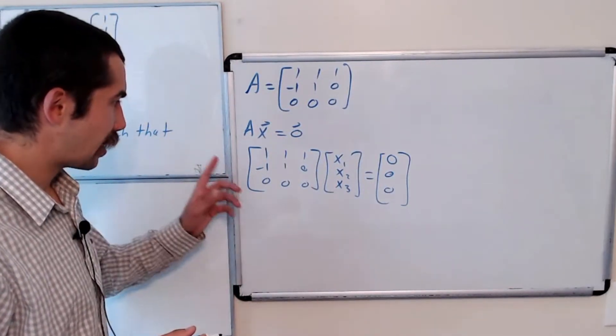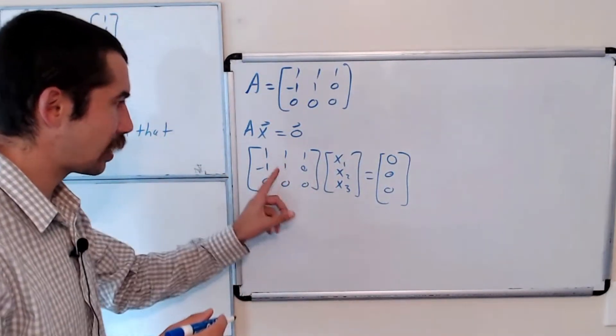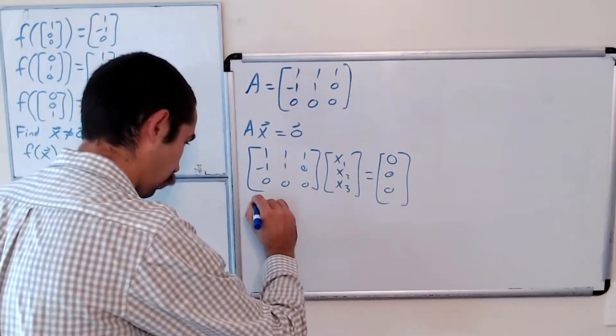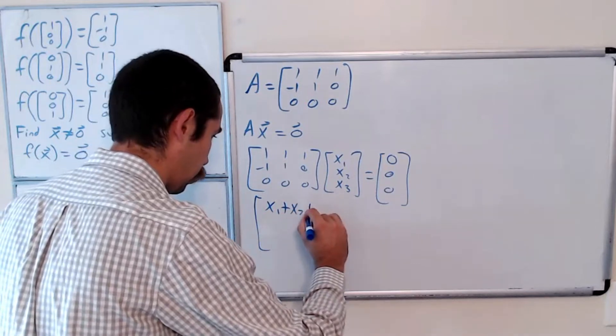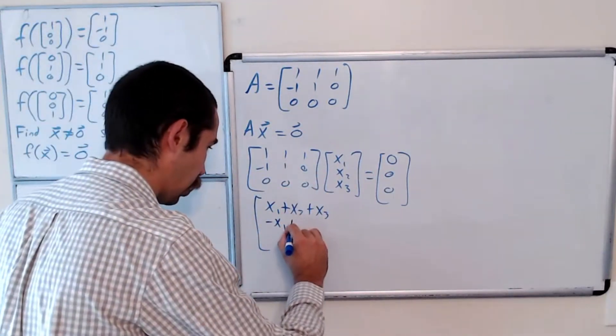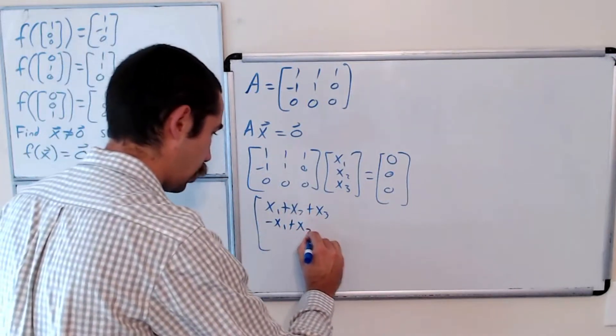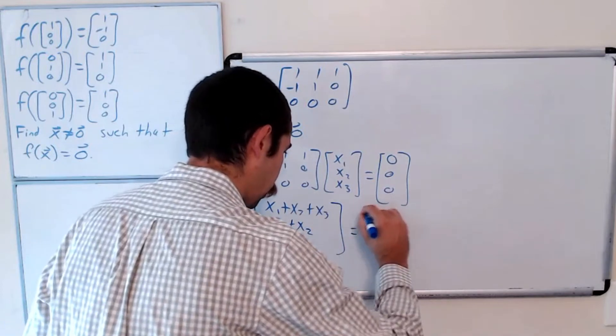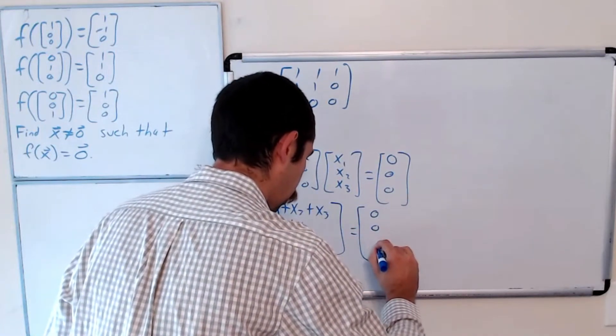Okay, let's multiply this out to see what this says. This first row of our matrix would be x1 + x2 + x3. And the next one would be -x1 + x2. And the bottom row would be 0. And this is equal to (0,0,0).